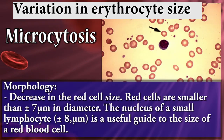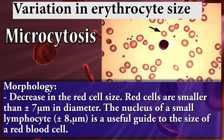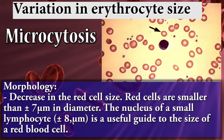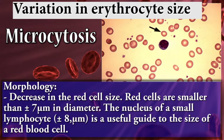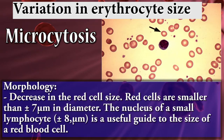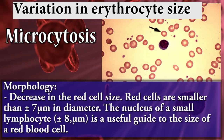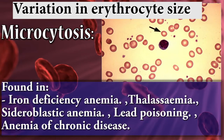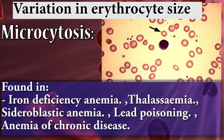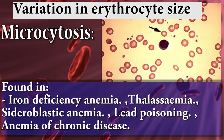When we talk about variation in erythrocyte size, the first term is microcytosis. The morphology of microcytosis: red cells are smaller than 7 micrometers in diameter. The nucleus of a small lymphocyte is a useful guide to the size of a red blood cell. Found in iron deficiency anemia, thalassemia, sideroblastic anemia, lead poisoning, and anemia of chronic disease.